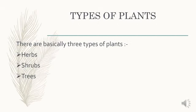Now, types of plants. There are basically three types of plants: herbs, shrubs, and trees.